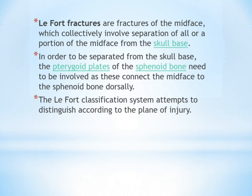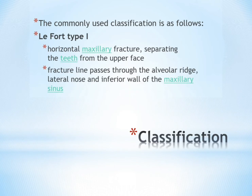The Le Fort classification system attempts to distinguish according to the plane of injury. There are three types. Le Fort type 1 is a horizontal maxillary fracture separating the teeth from the upper face. The fracture line passes through the alveolar ridge, lateral nose, and inferior wall of the maxillary sinus.